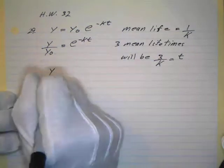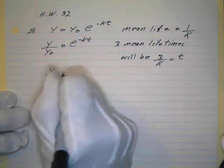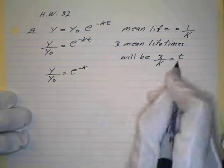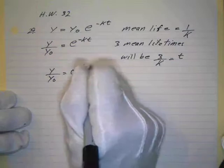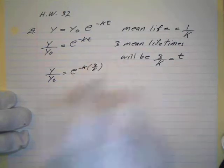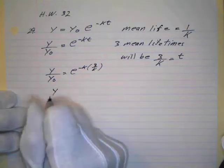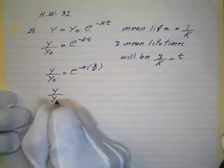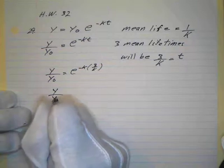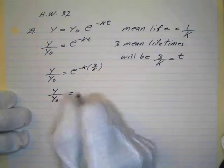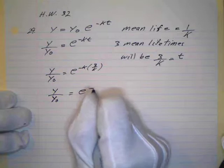This is giving my ratio depending on the time. In this case, y over y sub 0 will equal e to the negative k, and my time is going to be just 3 over k. So the k's cancel, so we have this ratio e to the negative 3. This is the ratio of what I started with to what I had.